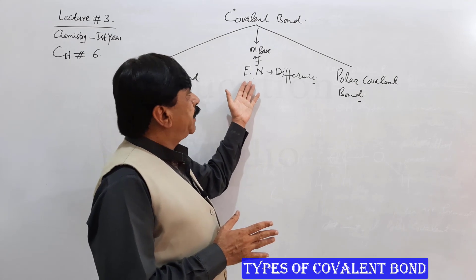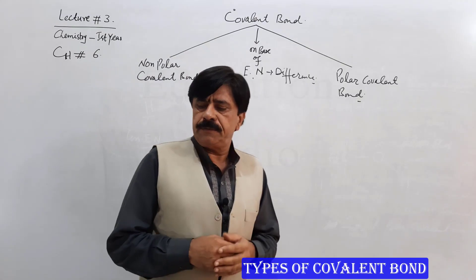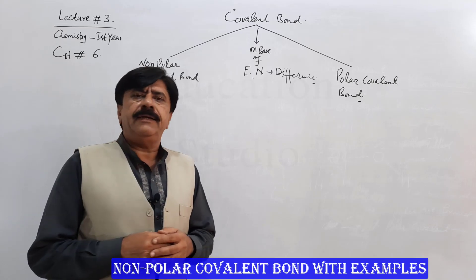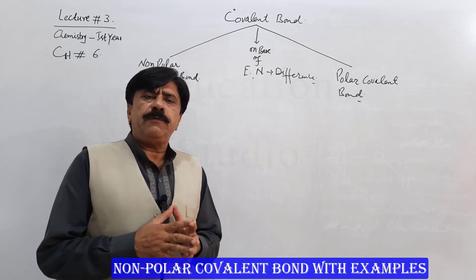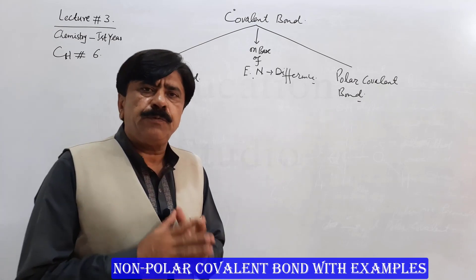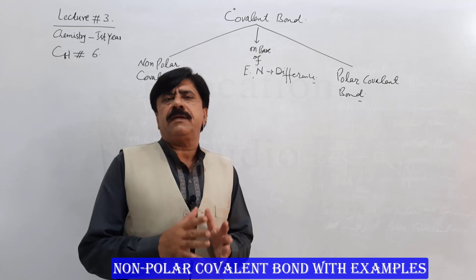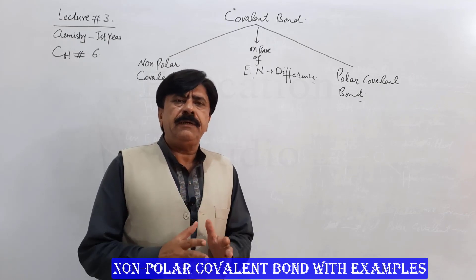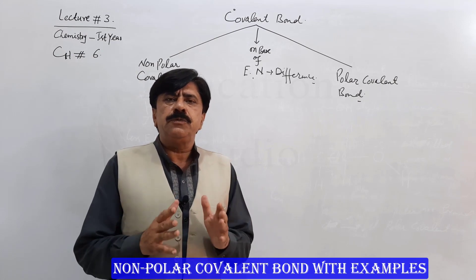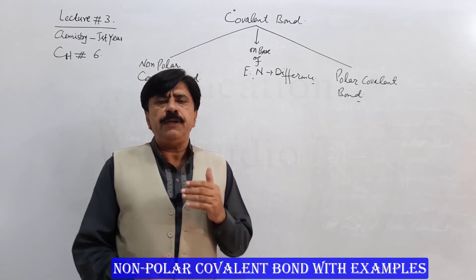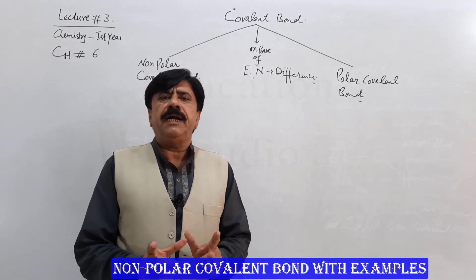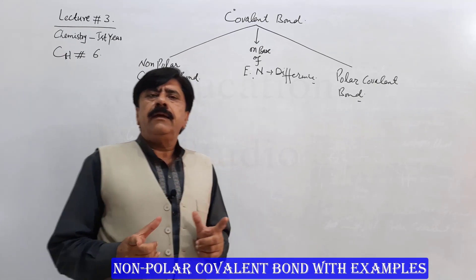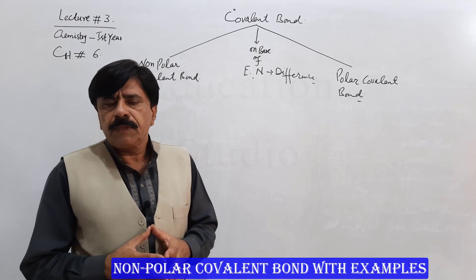As far as the nonpolar covalent bond is concerned, it can be defined as that type of covalent bond in which the bond is formed between two similar kinds of atoms, and the shared electron pair is distributed equally among these two bonded atoms. Resultantly, due to that even distribution of electrons, the atoms and overall the molecule remain electrically neutral.